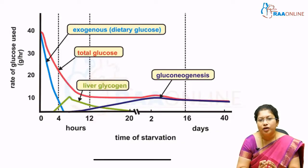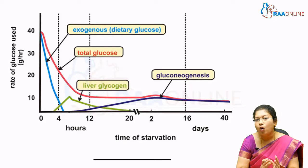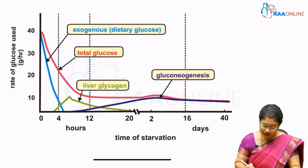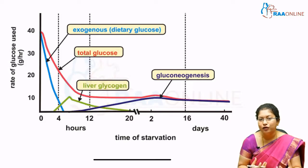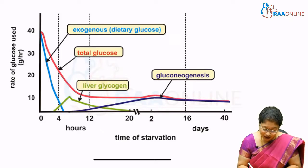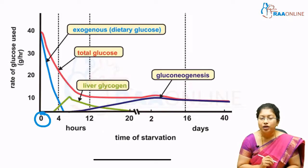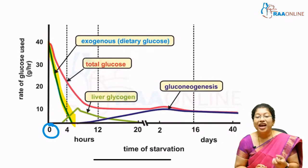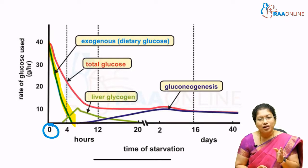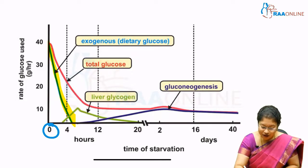In this diagram, you can see that the x-axis shows the time of starvation and the y-axis shows the rate of glucose used. At zero hours, you are taking dietary glucose — that means you are eating food in the morning, lunch, or dinner. The glucose level is very high here. The blue line shows the exogenous dietary glucose which you are eating, and this comes down within a six-hour period.